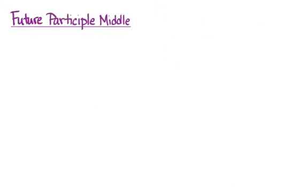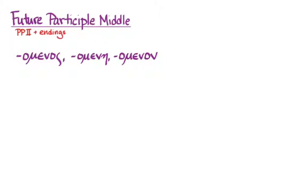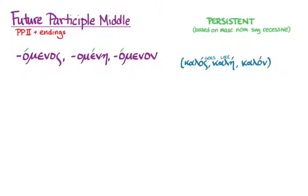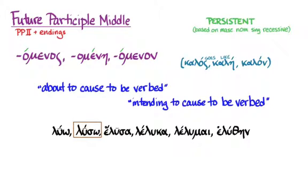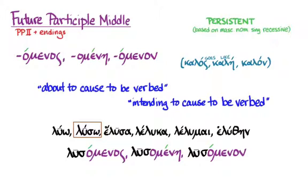When we move on to the future, we have to do the middle separately from the passive. The future middle always comes from the second principal part, and then we need endings to make that verbal stem into an adjective. They are the same as the present middle/passive endings, which again go like kalos, and follow the same rules for accent. The default translation is 'about to cause to be verbed,' but much more often, the future participle implies purpose or intention, so a better translation is 'intending to cause to be verbed.' With luo, you take the second principal part, add those adjective endings to the future stem, and get luomenos, luomene, luomenon — meaning 'intending to ransom.'